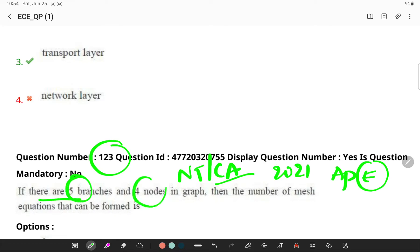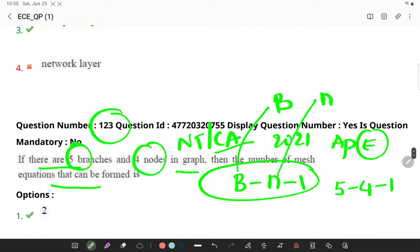If there are 5 branches and 4 nodes in a graph, then the number of mesh equations - remember you have a formula which is B minus N minus 1. Here B is the number of branches, N is the number of nodes. Number of branches is 5 and nodes is 4, so 5 minus 4 minus 1, which is simply 2.